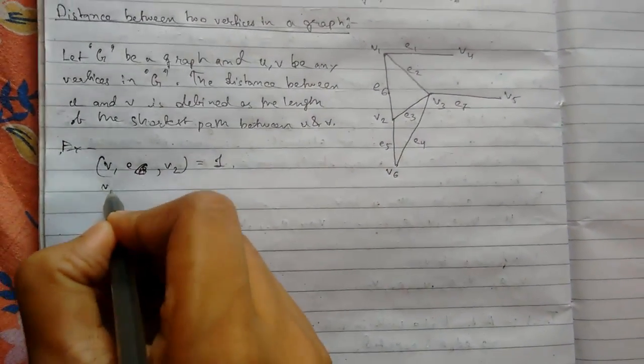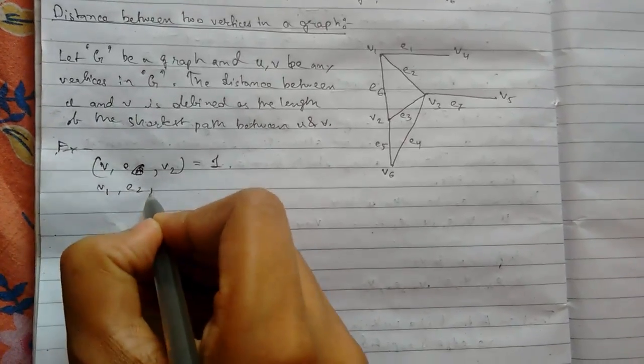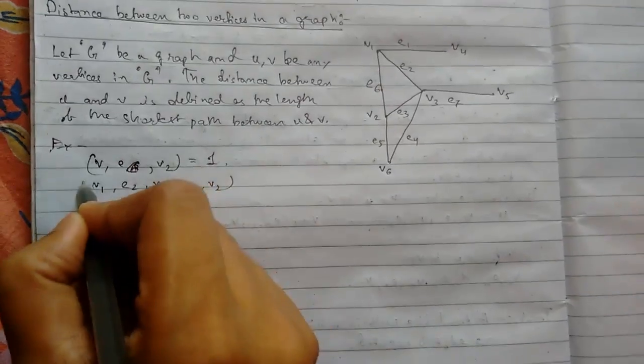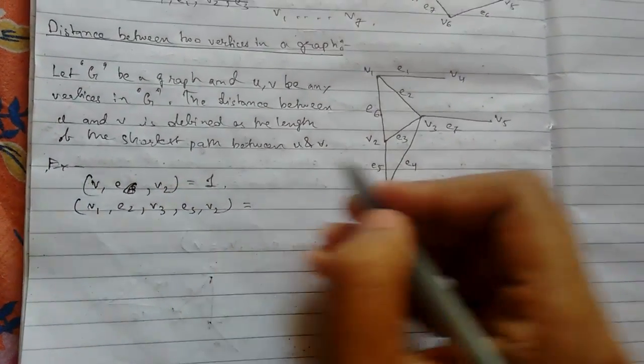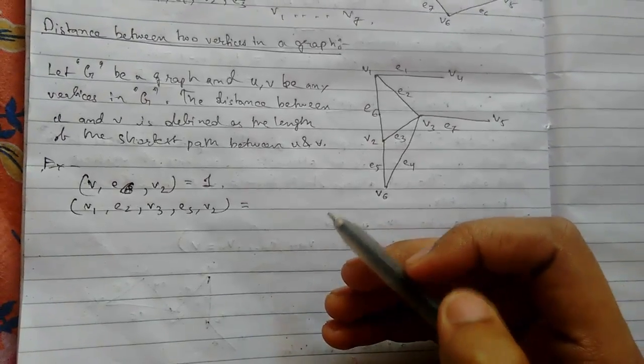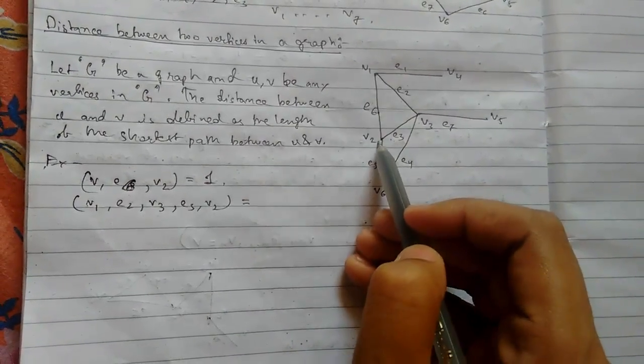Let me show you another example. Suppose you have v1, e2, v3, e3, and v2. We need to go from v1 to v2. So v1, e2, v3, e3, v2.